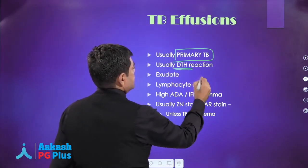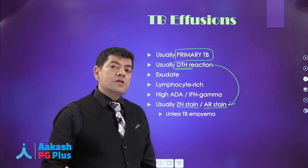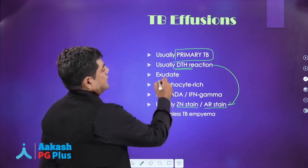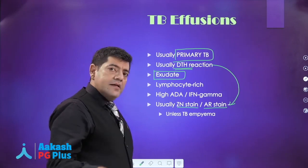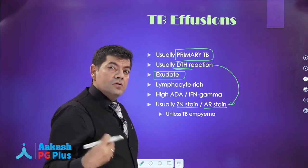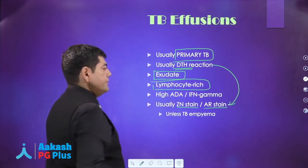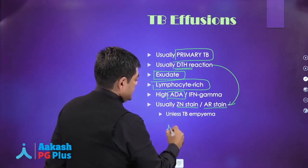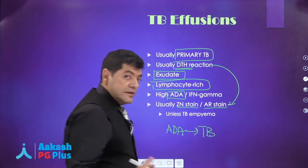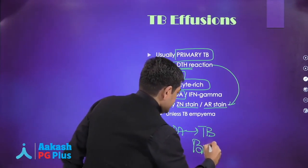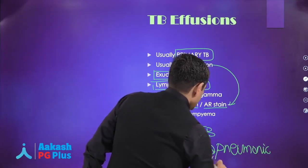It is usually a delayed-type hypersensitivity reaction, which means there are no bacilli — whether you do a ZN stain, a rhodamine stain, or even a culture, all those would usually be negative. It is an exudate. Most tubercular fluids — pericardial, pleural, ascitic, or TB meningitis — are all rich in protein, rich in lymphocytes, and have a high ADA. Adenosine deaminase is an enzyme for purine metabolism, elevated in TB patients, but it is not specific for tuberculosis.